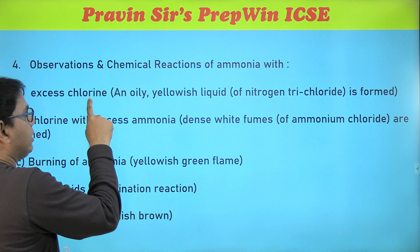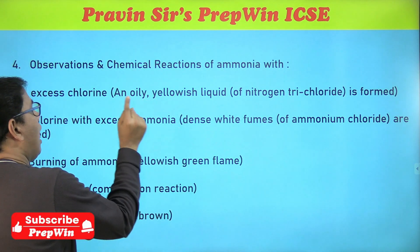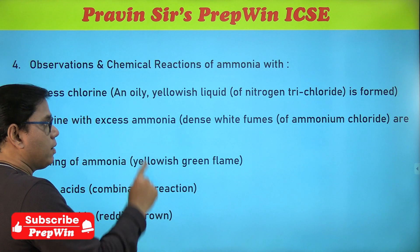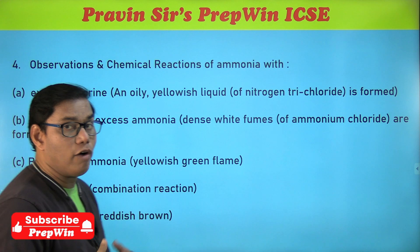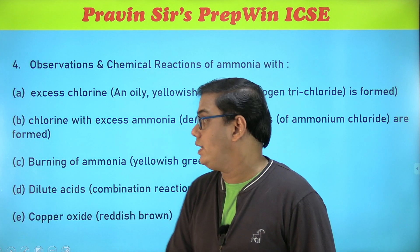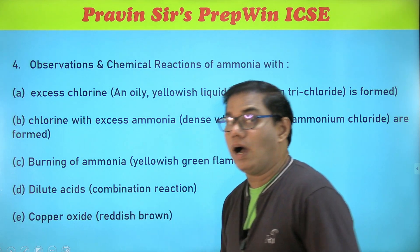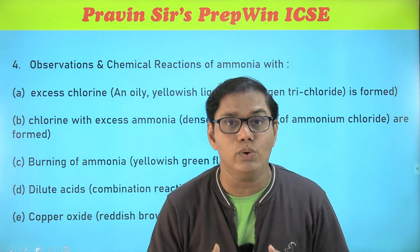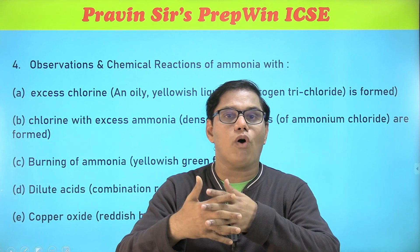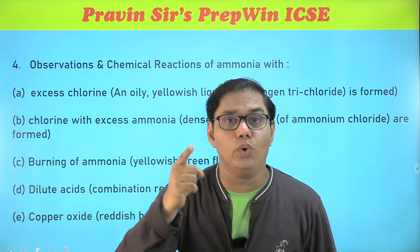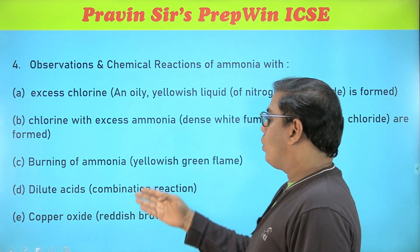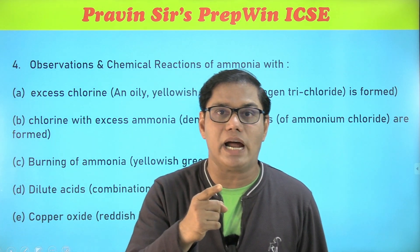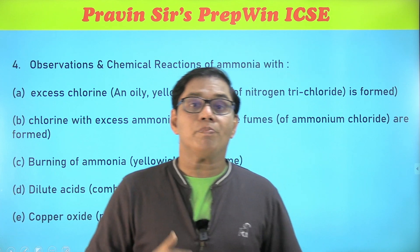When chlorine is in excess, you get nitrogen trichloride, and the observation is an oily yellowish liquid. When ammonia is in excess, you get dense white fumes of ammonium chloride (NH₄Cl). Burning of ammonia — it burns with a yellowish-green flame. What happens when ammonia reacts with a dilute acid? That is a combination reaction: A + B gives AB. The reaction of ammonia with copper oxide produces a reddish-brown product — that product is NO₂.